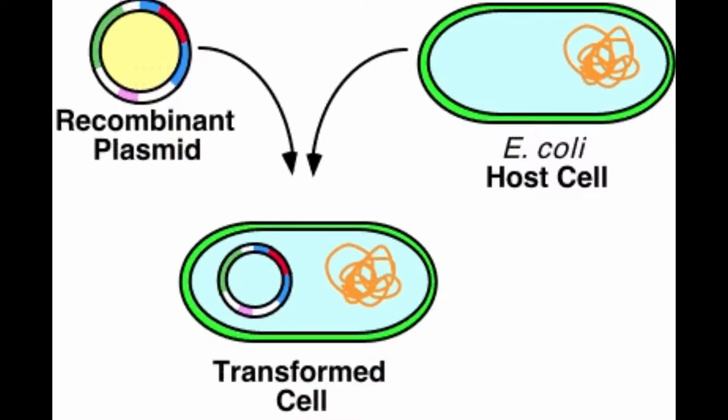In this picture, we can take E. coli or the whole cell as an example of a bacteria and the recombinant plasmid as a DNA. In order to form a transformed cell, the recombinant plasmid is joined or mixed with the E. coli or host cell.